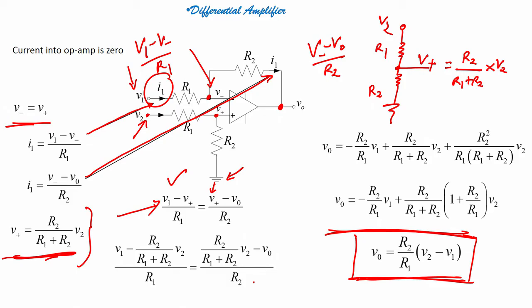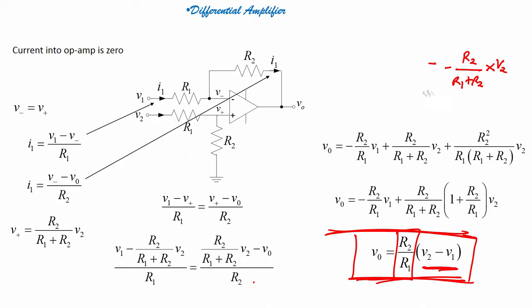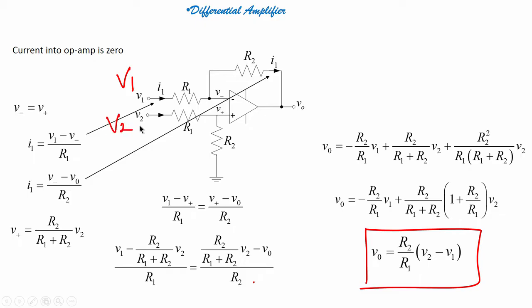So what is it doing? It is a differential amplifier — it is amplifying the difference of voltages at the output. The amplification factor is determined by the values of R1 and R2. R1 and R2 are my feedback resistors. This is how the differential amplifier works: when I apply voltages V1 and V2 at both terminals, the output voltage is the difference of those voltages multiplied by R2/R1.